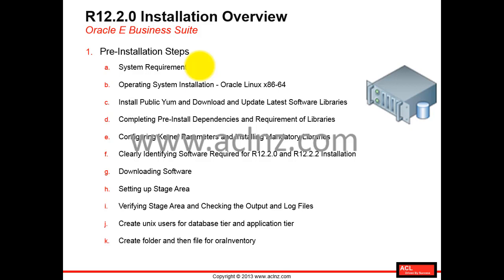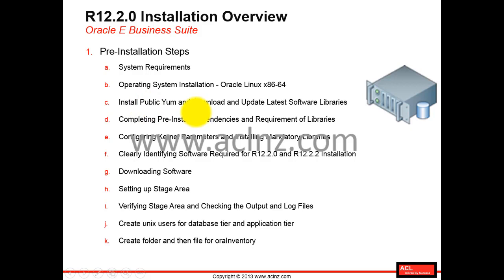I'll cover the exact RAM and sizing requirements a little later. Once you have that kind of system in place, you've got to install the operating system. For this course, we installed the complete system in Oracle VirtualBox on Oracle Linux x86-64, version 5.7. While installing Linux itself, you have to install a number of libraries and configure the Linux kernel parameters, without which the EBS installation will fail.